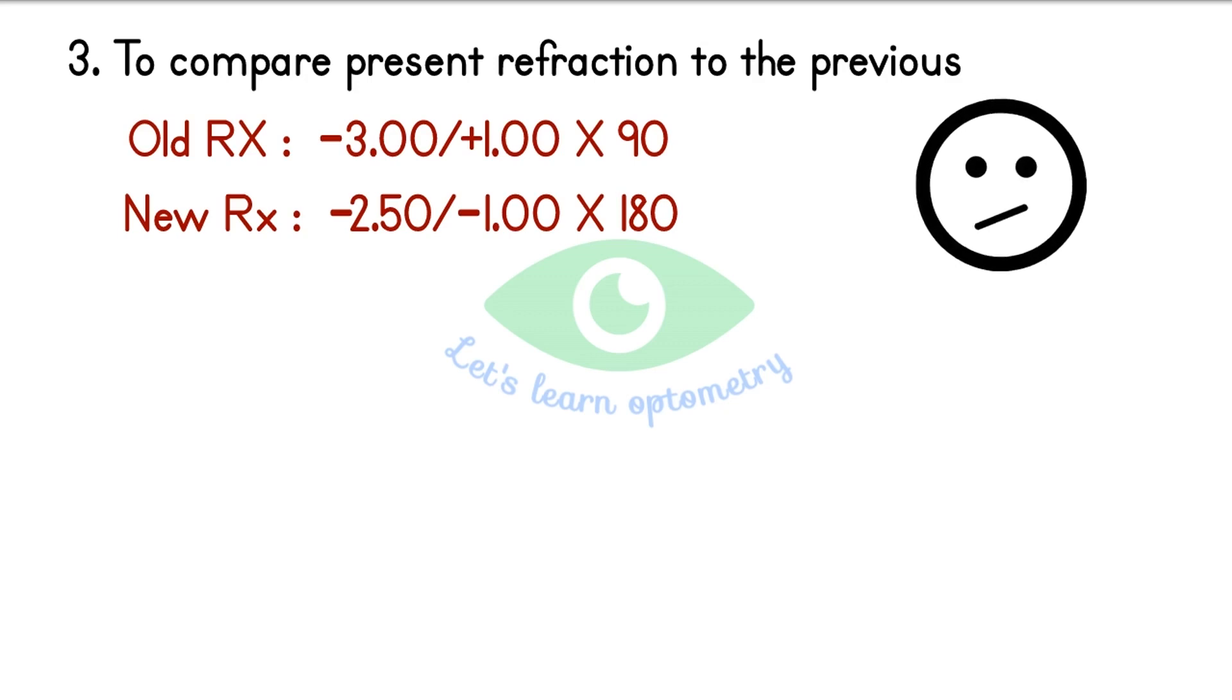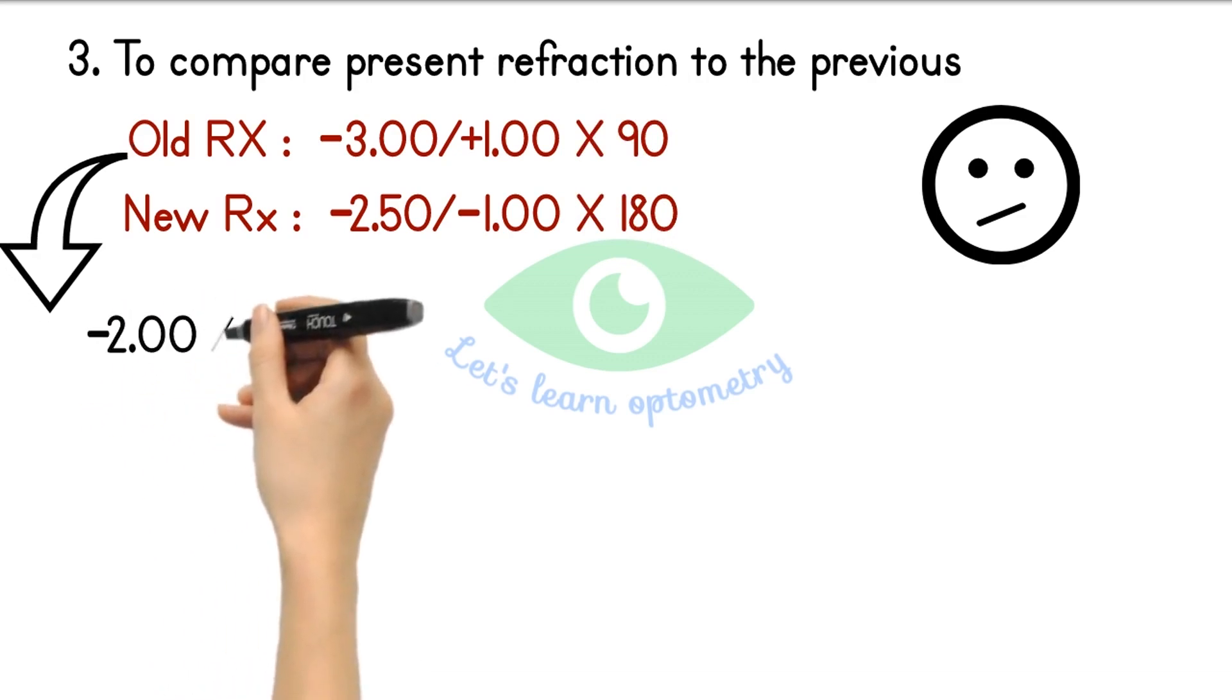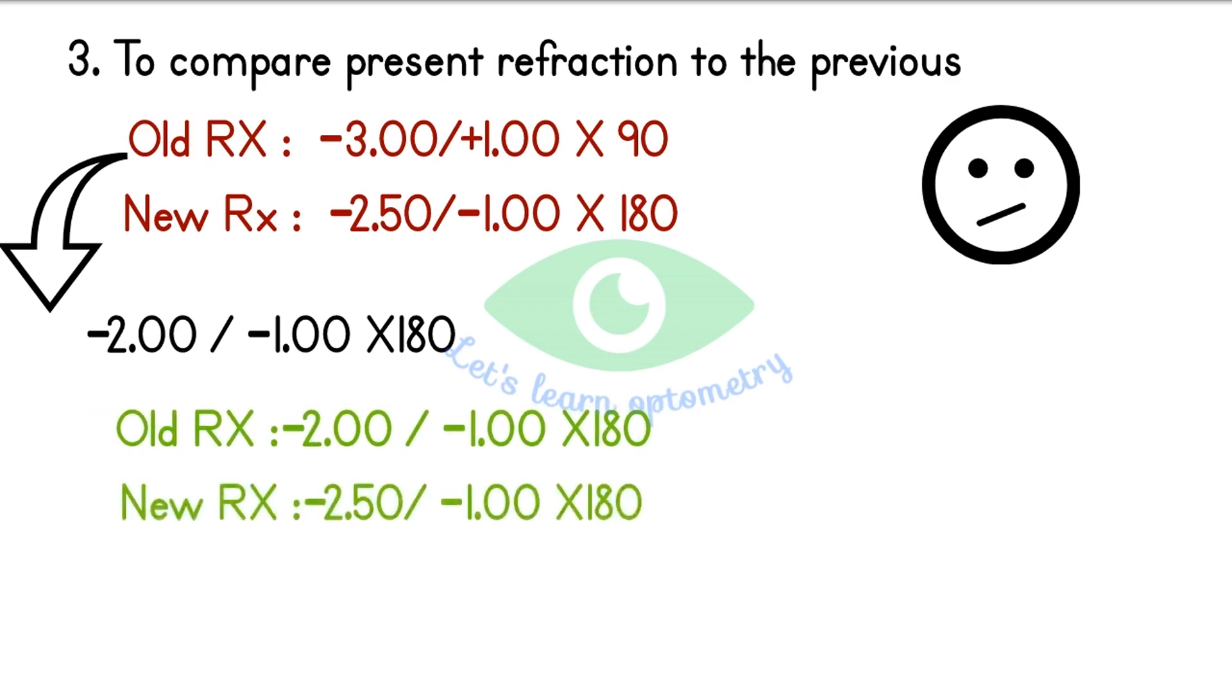So now you may wonder why the cylinder power is changed from plus to minus with axis variations also. But if you transposed his previous prescription you will get minus 2 spherical minus 1 cylinder at 180 degree axis. So now it tells you that only the spherical power is increased from minus 2 to minus 2.5. So without knowing simple transposition we may end up in some troubles, right?